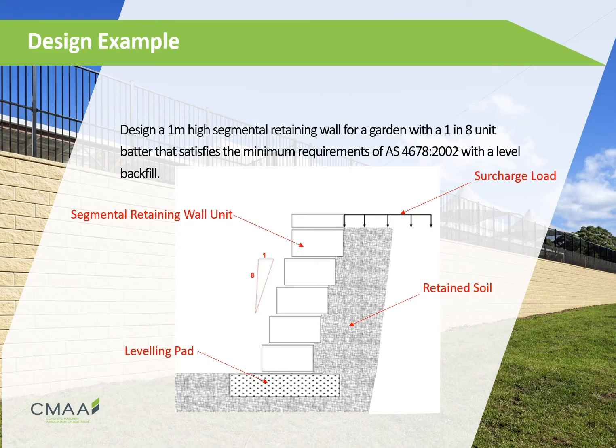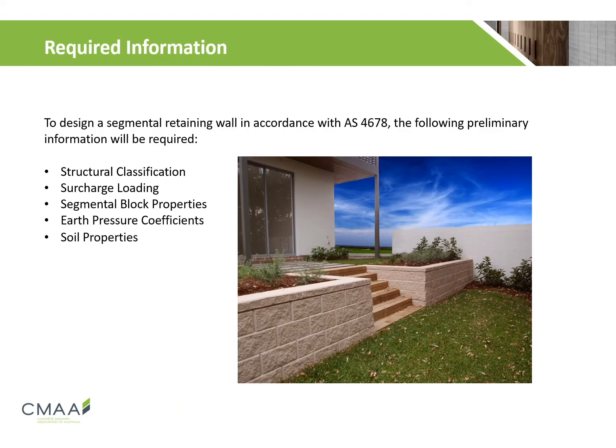Moving on to our design example, we are required to design a 1 m high segmental retaining wall with a 1 in 8 unit batter that satisfies minimum requirements for AS 4678 with a level backfill. To design a segmental retaining wall in accordance with AS 4678, the following preliminary information will be required: the structural classification, the surcharge loading, the segmental block properties, the earth pressure coefficients, and the soil properties.